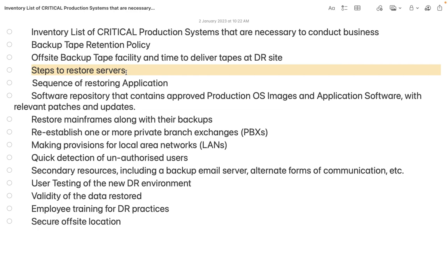We need to have handy the particular steps to restore the servers — what are the steps, what server is connecting with what other server, how many VMs are required, what is the connectivity required, what are the usernames and passwords and when were they reset last. Moreover, we need to know the sequence of restoring applications — whether we need to bring up the web server, application server, or database server first, and what server has to be prioritized for restoration. That list should also be available in advance. Then software repositories should be backed up properly, and your OS images with all applications and software installed should be managed in a proper way.